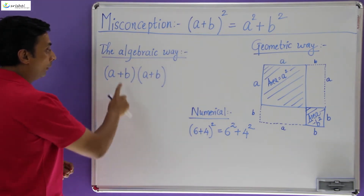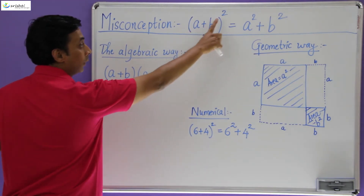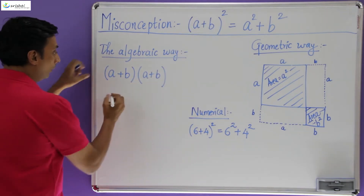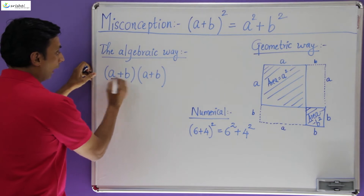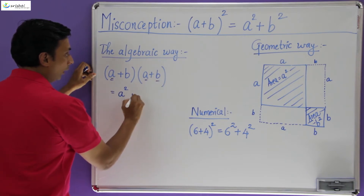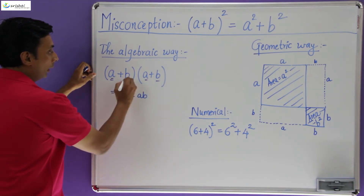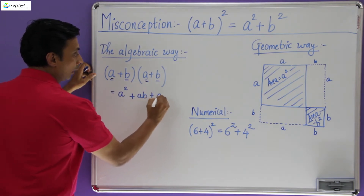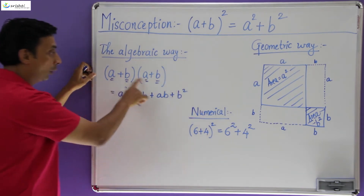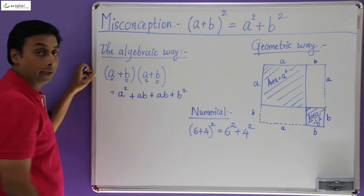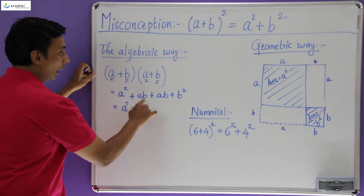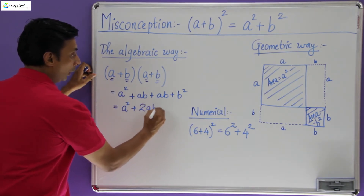(a + b) whole square can be written as (a + b) × (a + b). We know that the square of a number is the number multiplied by itself. If I were to multiply this term by term: a × a gives me a², a × b gives me ab, b × a gives me ab, and b × b gives me b². So if I now merge the like terms, I get a² + ab + ab, which is 2ab, plus b².